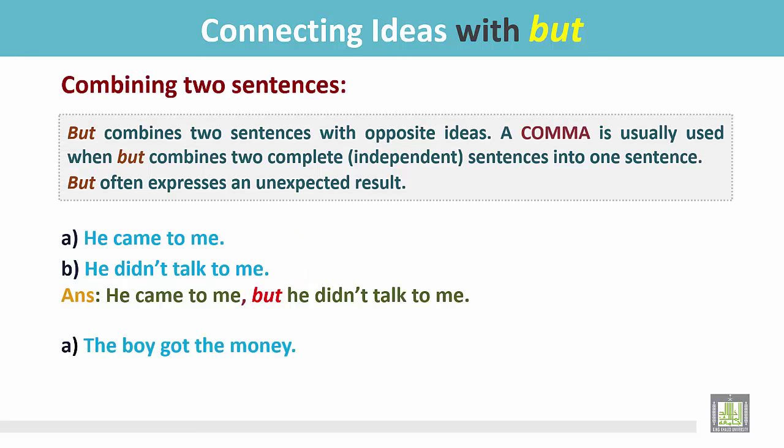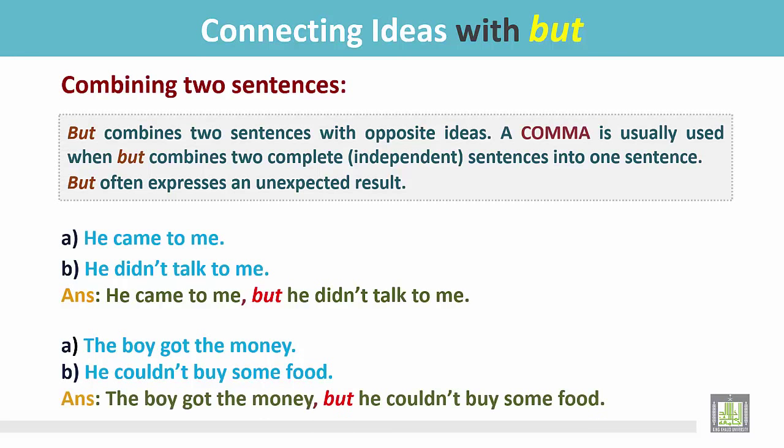'The boy got the money. He couldn't buy some food.' As the boy had some money, he could buy some food, but he couldn't — the opposite ideas are expressed here. Joined with 'but': 'The boy got the money, but he couldn't buy some food.'